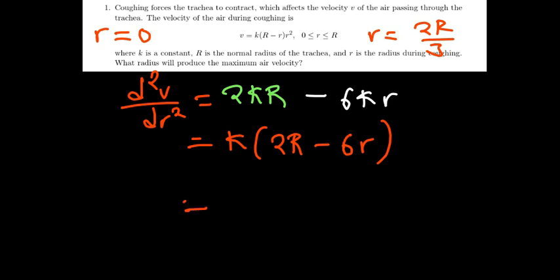If you plug in 0, plug in 0 where there is r, that point will become 0, that whole point will be eliminated. So we basically remain with k times 2R, or 2kR. Is that positive or negative? It's positive, so it's a minima.